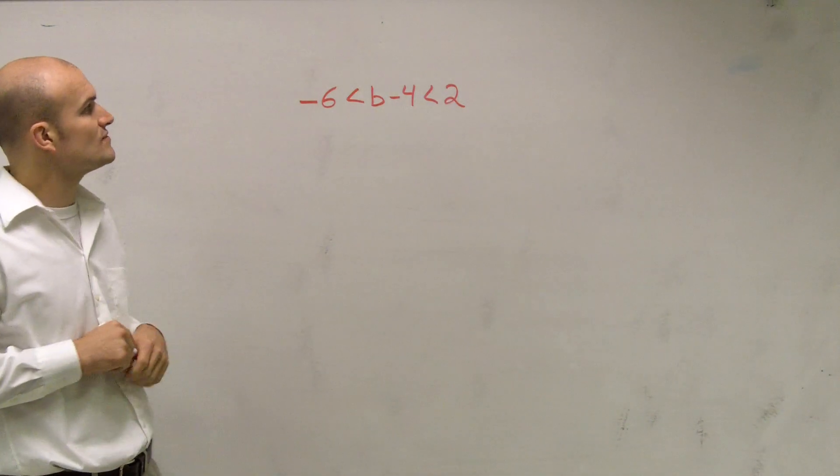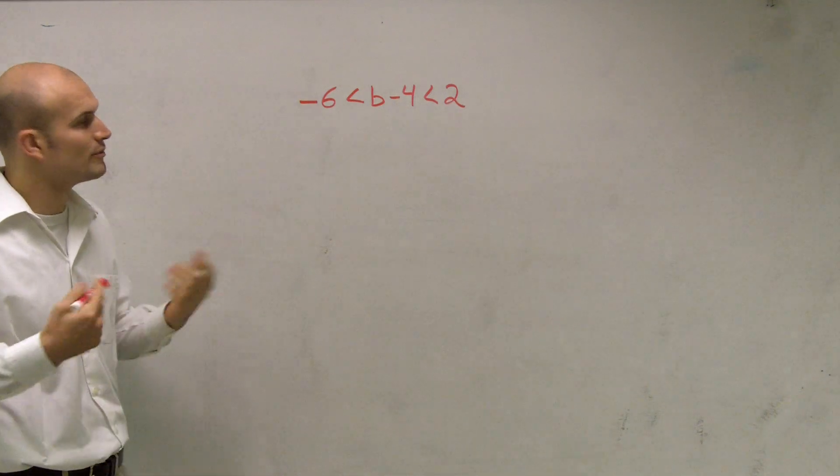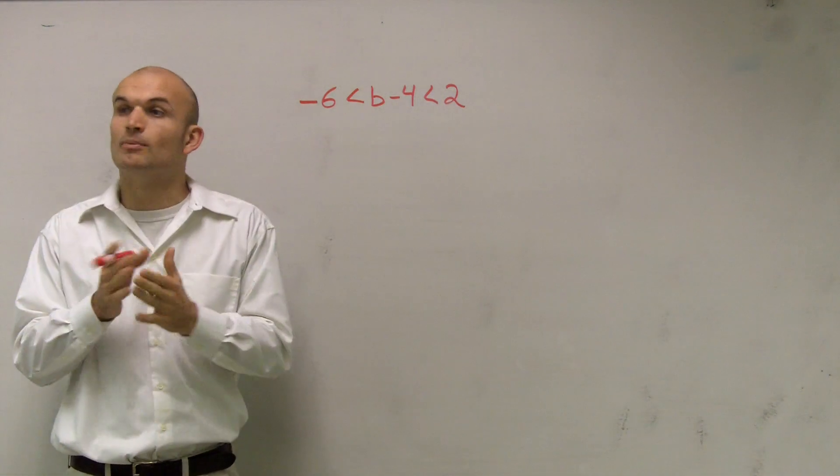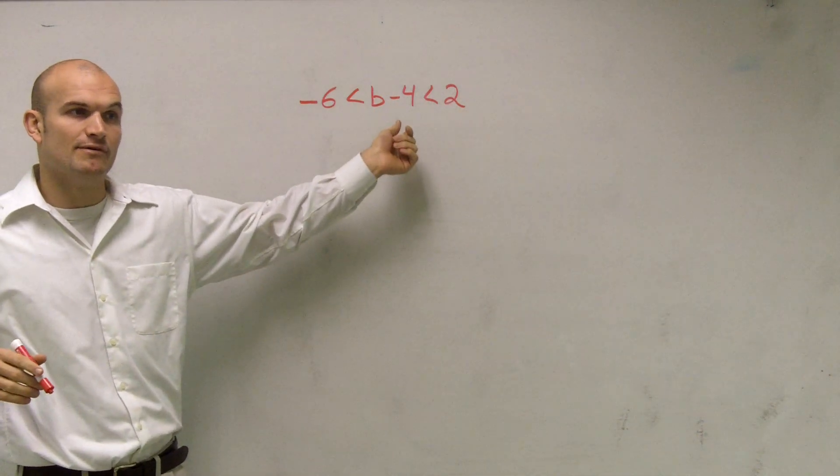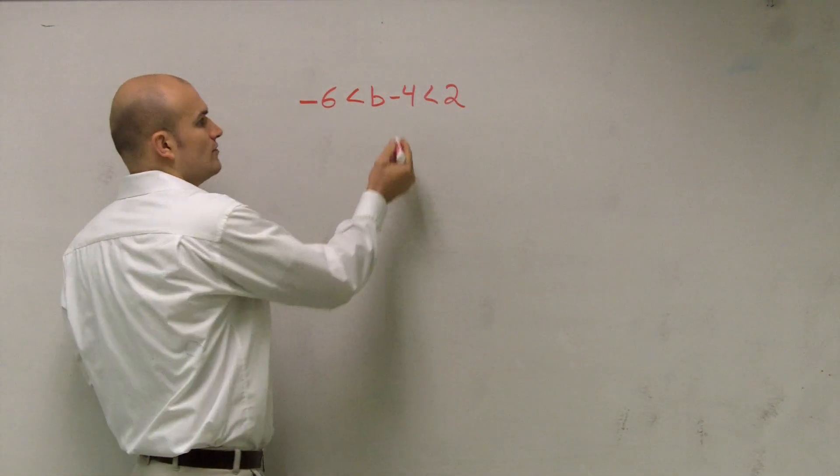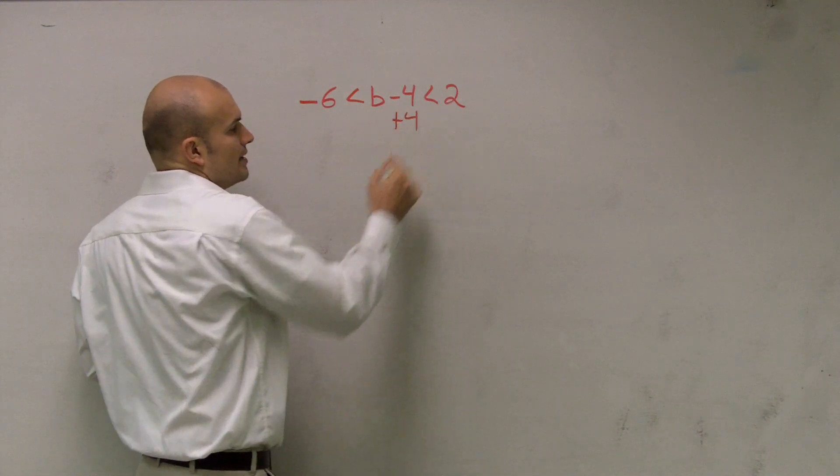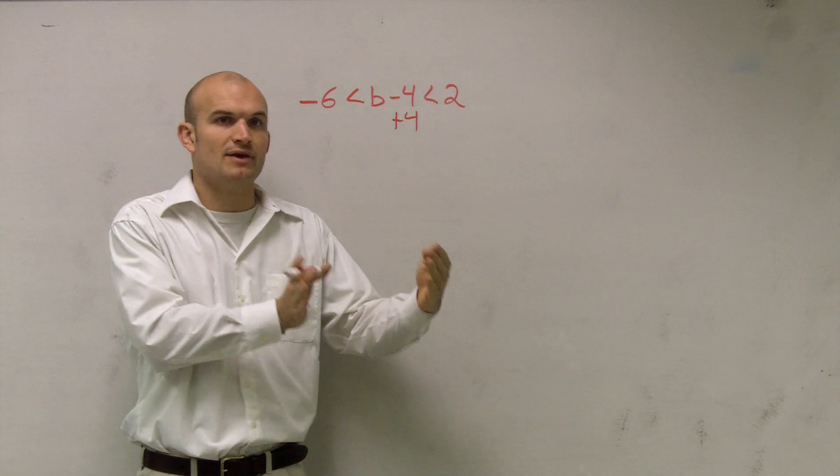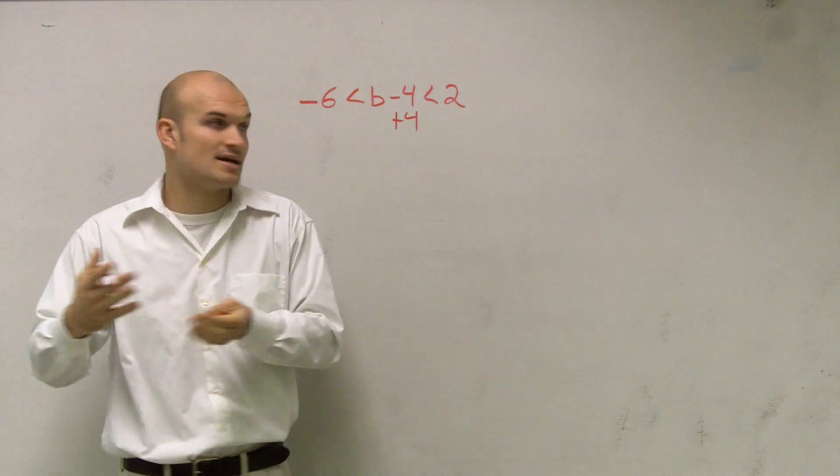So if I have negative 6 is less than b minus 4, which is less than 2. Remember, when we want to solve, we want to get our variable by itself. So right now I have my variable being subtracted by 4. So to get the variable by itself, I can add 4. Now remember, when we had equations or we said inequality, we'd always add whatever you added to one side, you'd have to add to the other side.